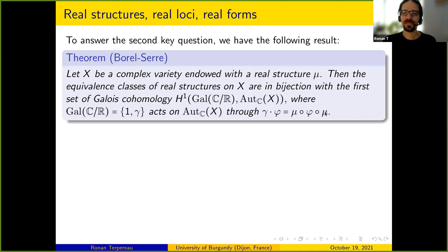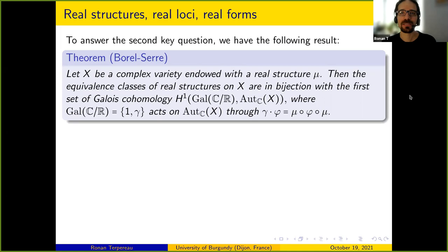Since mu is anti-regular and φ is regular, the conjugation is regular — giving a well-defined Galois action. This is called Galois cohomology because you put a Galois group, but it's simply group cohomology. The interest of this reformulation is that you can now use the full cohomology toolbox: exact sequences, classical results to prove finiteness, and so on.